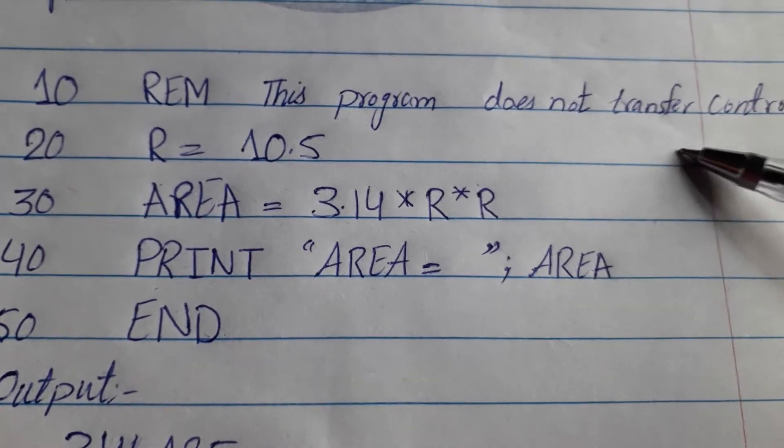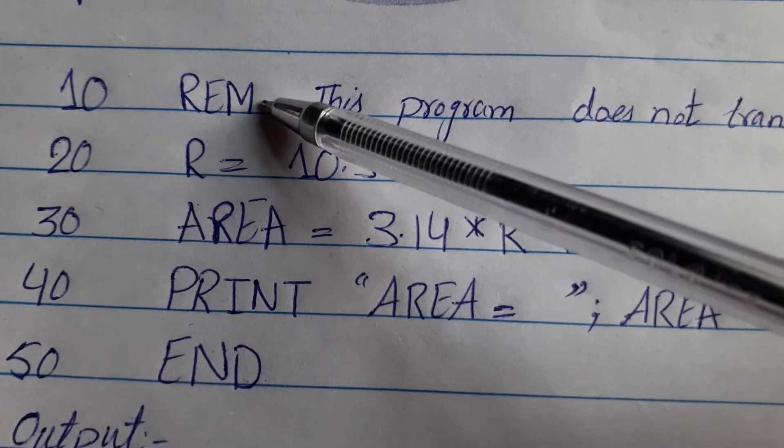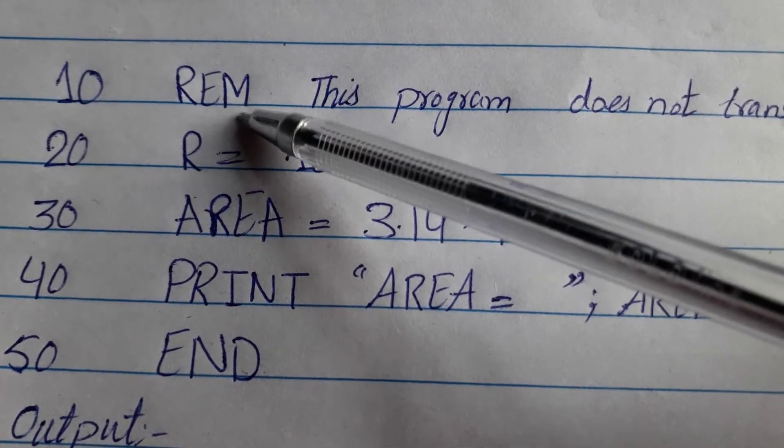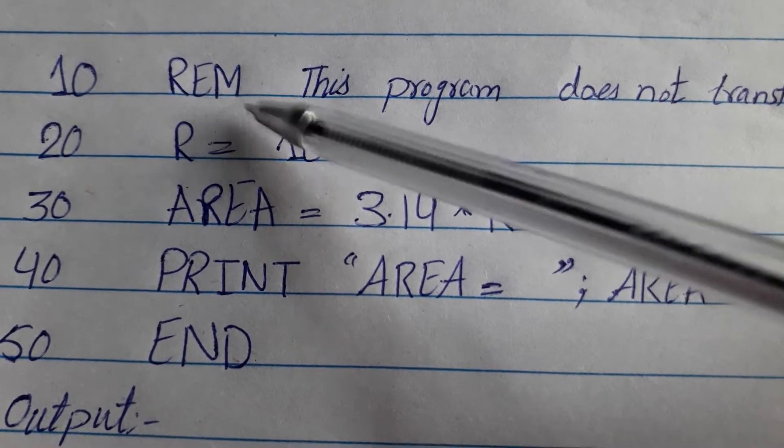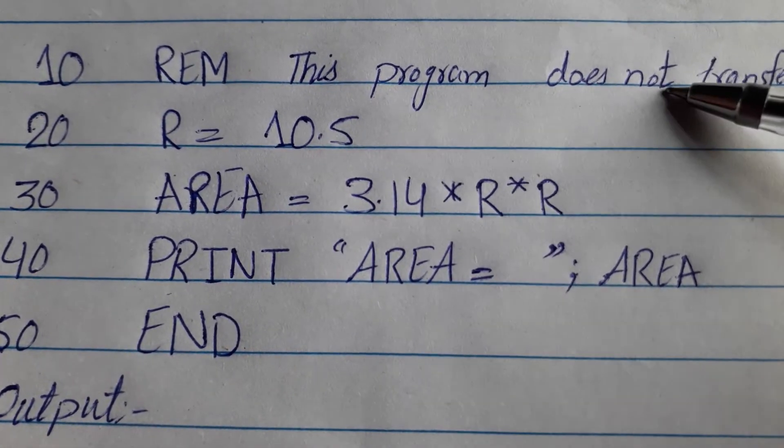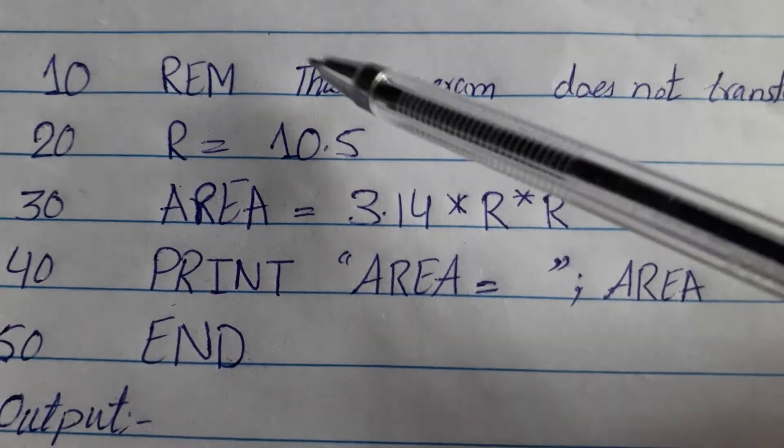This program doesn't transfer control. This is a statement. This is a REM statement. This is a work that is used as a comment. When you write anything, you can write anything. We write it for our easy way.